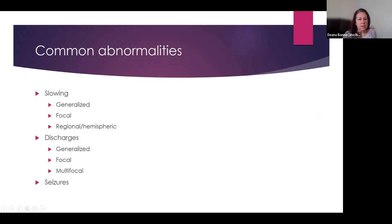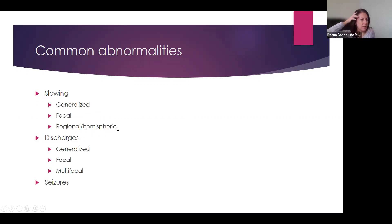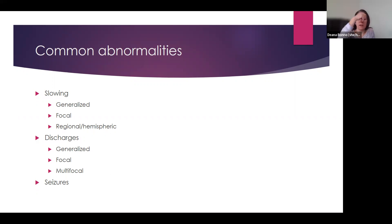Now we'll talk about some abnormalities you'll most commonly see mentioned in EEG reports. They're grouped into three major categories: slowing, discharges, and sometimes seizures. In terms of slowing, we can describe generalized slowing, focal slowing — meaning just in one area of the brain — or regional or hemispheric slowing, which might involve a couple of different lobes or one entire side of the brain. Similarly, discharges can also be generalized, focal, or multifocal — meaning three or more areas of the brain are independently affected.